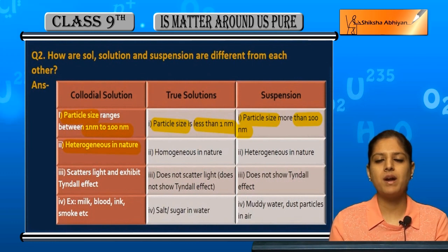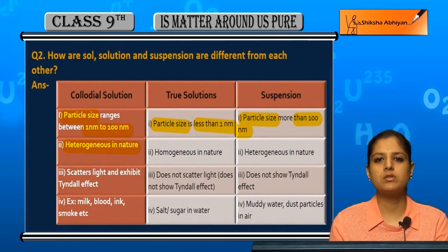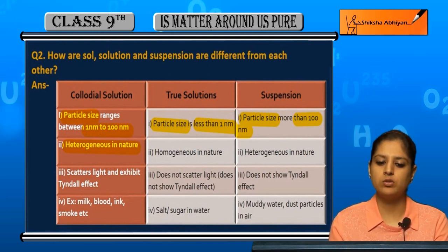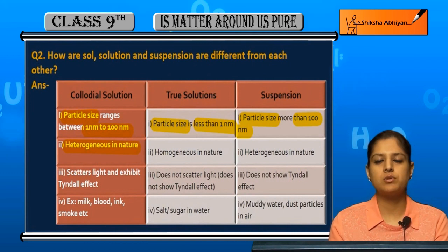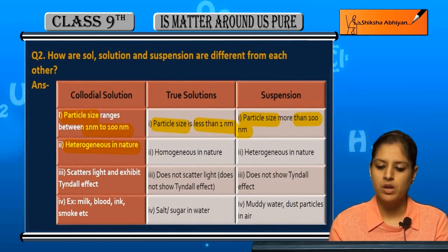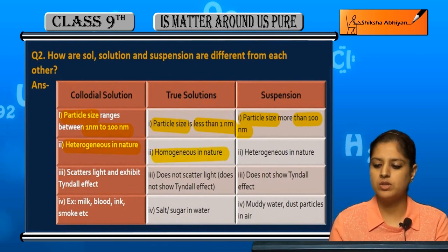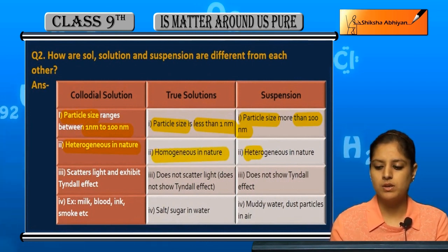Colloidal solutions are heterogeneous in nature because their particles remain suspended and do not dissolve. So colloidal solutions are heterogeneous in nature. True solutions are properly soluble and are homogeneous, while suspensions are not soluble at all.